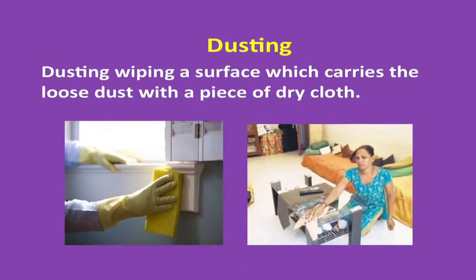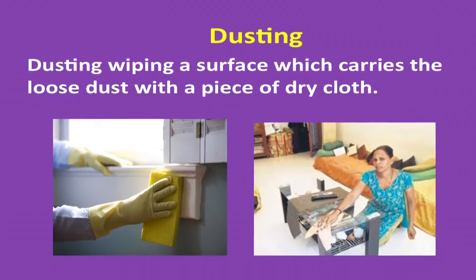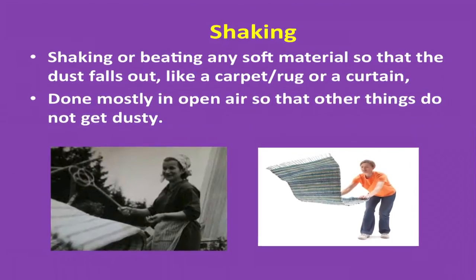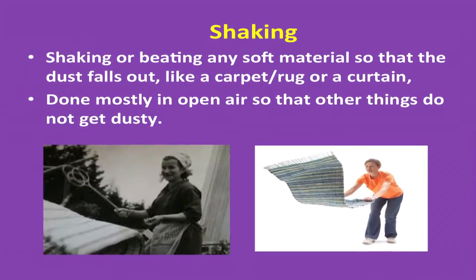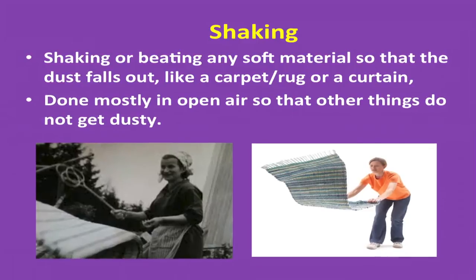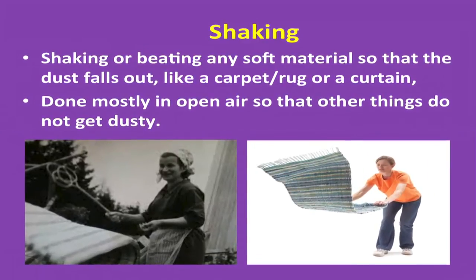Dusting: wiping a surface which carries the loose dust with a piece of dry cloth. The next method is shaking and beating — shaking or beating any soft material so that the dust falls out, like a carpet, rug, or a curtain. This is done mostly in open air so that other things do not get dusty.